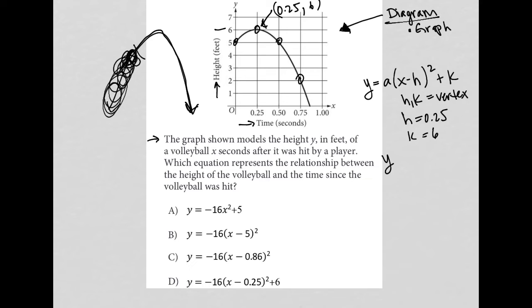And therefore, my equation should be y equals a times x minus 0.25, sorry, squared plus 6. Now I figured out what a is. I do know that it's going to be negative because the parabola is facing downward.